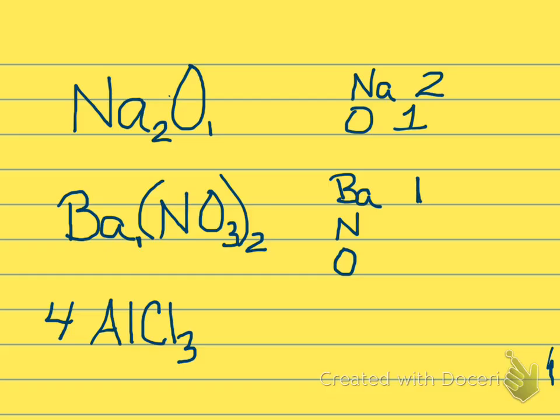The nitrogen, again, there's no subscript, so that means there's one, but because it's in parentheses, we're going to multiply that 2 times 1 to know that there are two nitrogens. And finally, the oxygen, this 3 subscript tells us there's 3 oxygens, but again, we're going to multiply that by 2, so 2 times 3 is 6. So we have 6 oxygens.